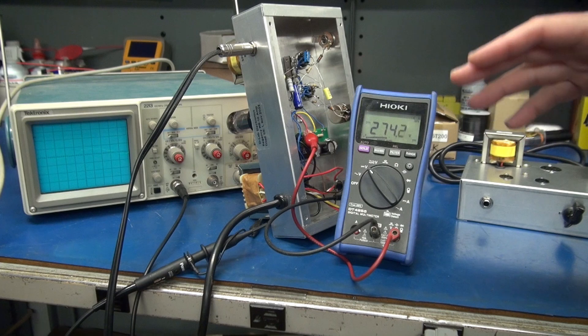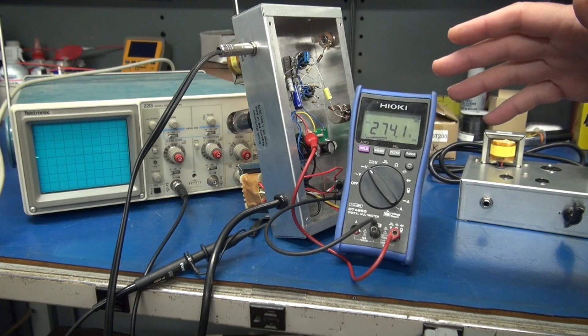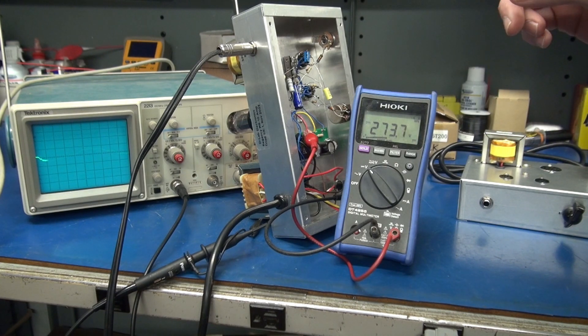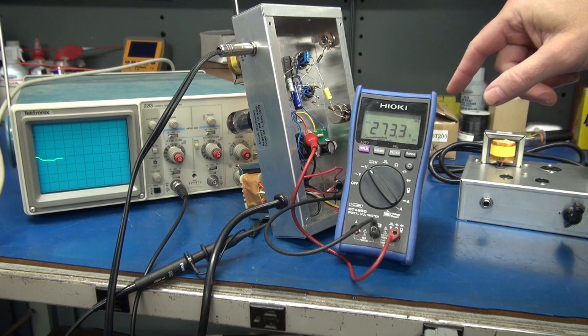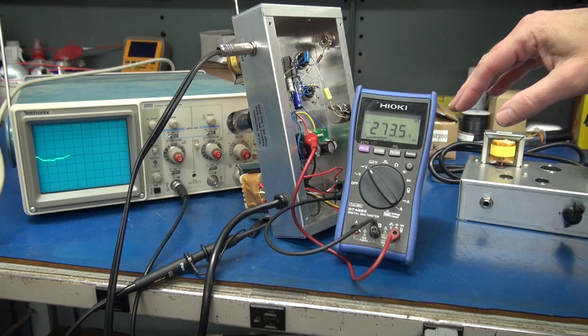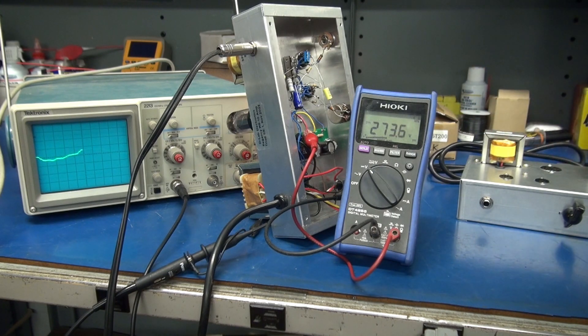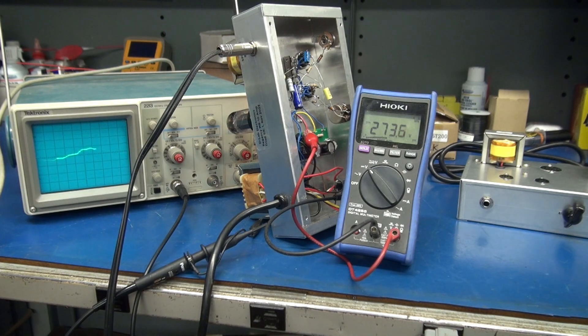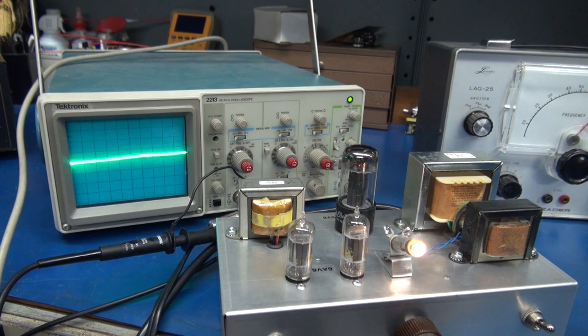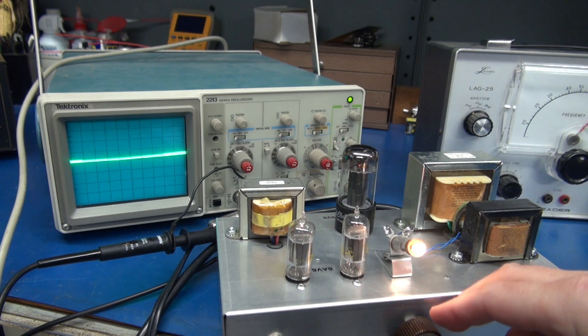Okay, first up: our 6V6 Class A amplifier utilizing the Triad N68X power transformer. High voltage is stabilized at approximately 273 volts. Next we'll hook it up to the scope and start checking the hum and output. Okay, here's the Triad unit. We're powered up, monitoring on the scope, volume's all the way down.